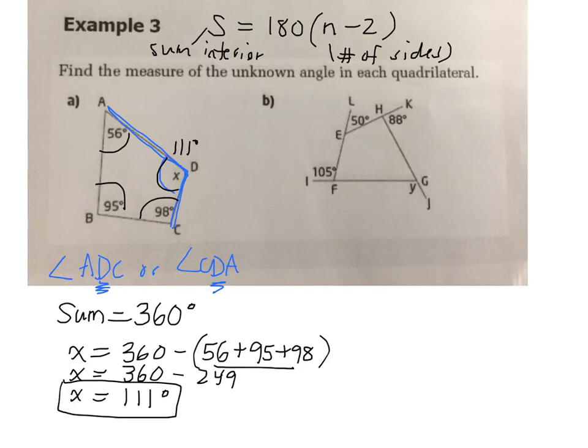Okay, so in this example, I have 50 degrees, which is an exterior angle. I have 88 degrees, which is an exterior angle. And I have another exterior angle. Okay, so we know three out of the four exterior angles. So can we find the fourth exterior angle? What should all the exterior angles add up to?